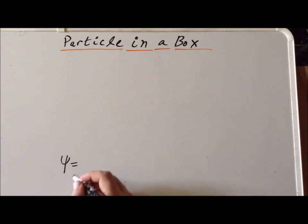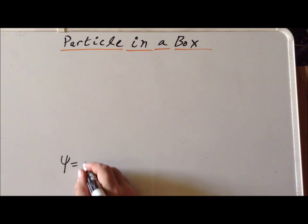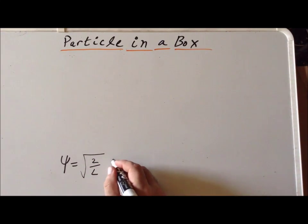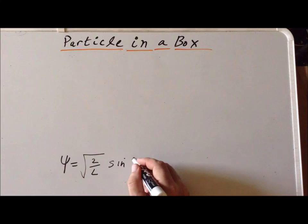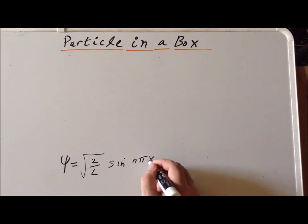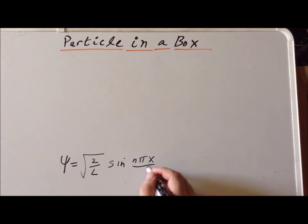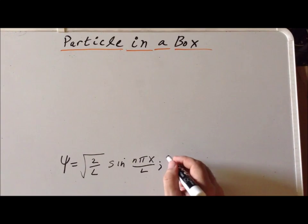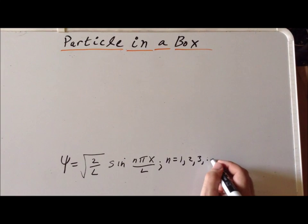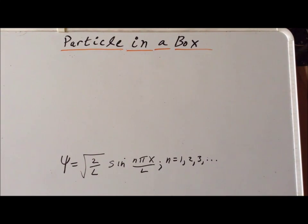First, recall that the wave function solutions are square root of 2 over L times the sine of n pi x over L, where n is 1, 2, 3, and so on, as some positive integer.